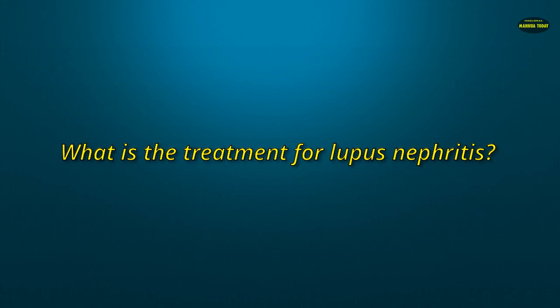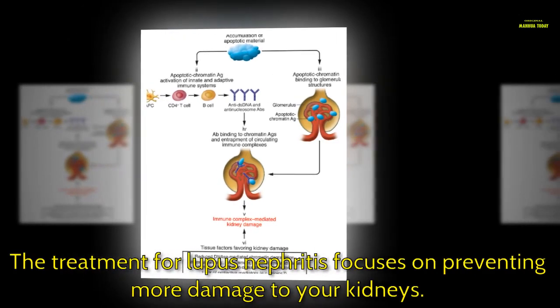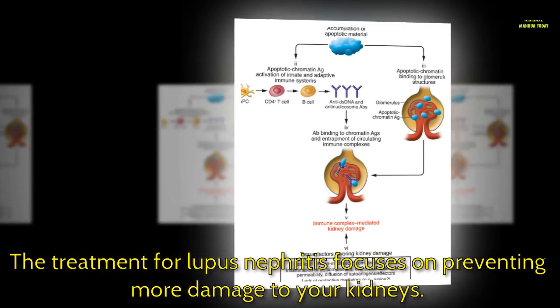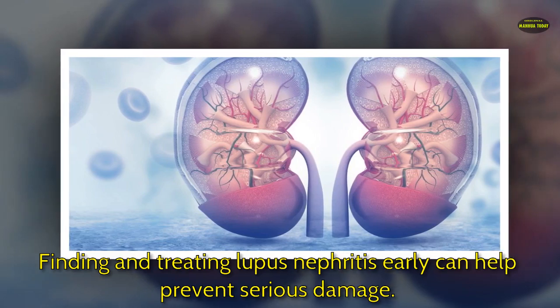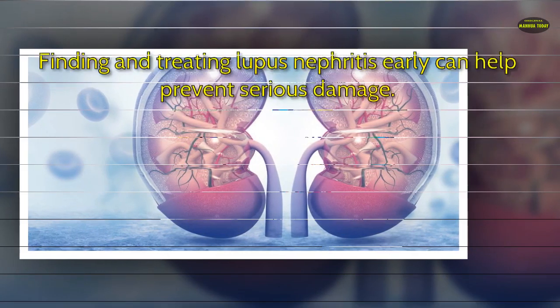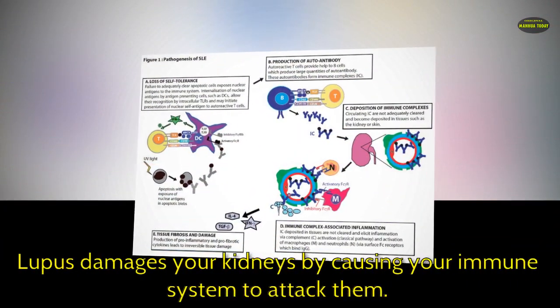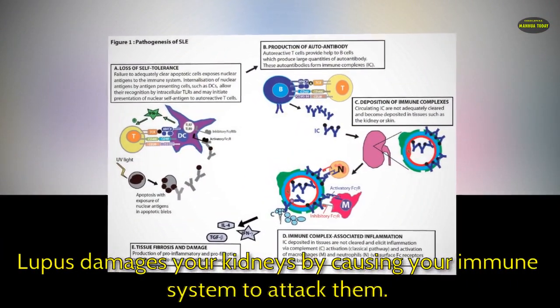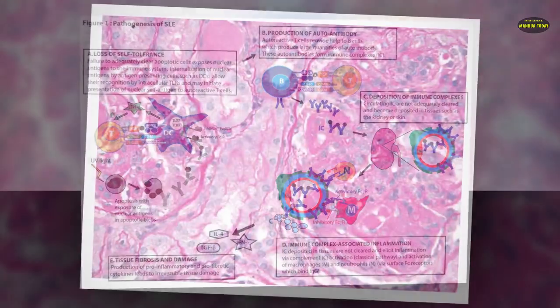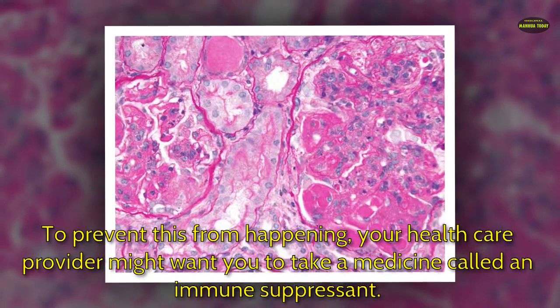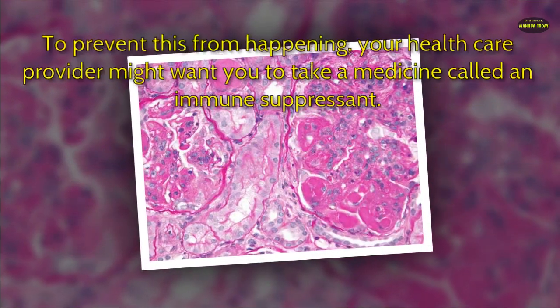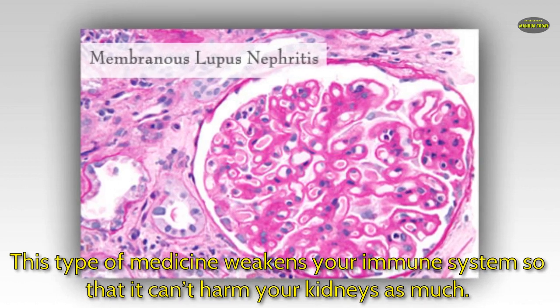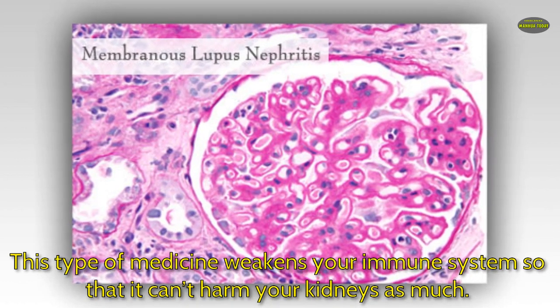The treatment for lupus nephritis focuses on preventing more damage to your kidneys. Finding and treating lupus nephritis early can help prevent serious damage. Because lupus damages your kidneys by causing your immune system to attack them, your health care provider might want you to take a medicine called an immune suppressant, which weakens your immune system so that it can't harm your kidneys as much.